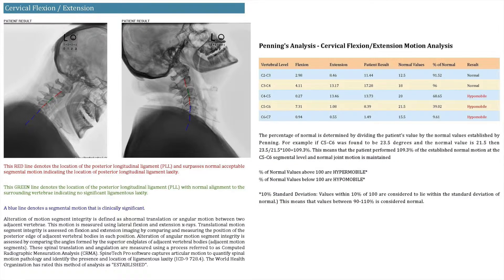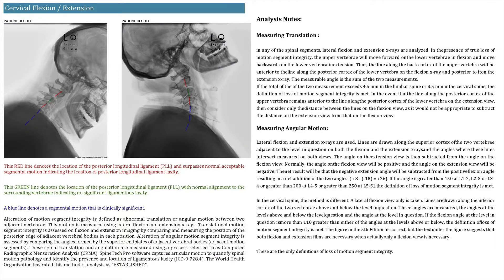The software also does Pennings analysis. You're going to get a Pennings analysis showing whether the joint is normal, hyper, or hypomobile. Here are the readings in the normal column and the ratings of this particular patient.